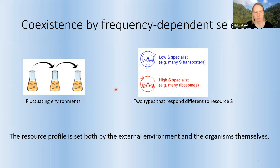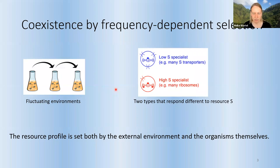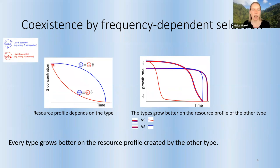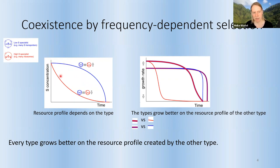Another interesting observation is that the resource profile is not only set by the external conditions, but also by the organisms themselves. Externally you decide how many nutrients you add after a transfer, but then the nutrient profile is also set by how fast the species eat these nutrients. Here's a cartoon showing over time: the blue one is the low resource specialist, and because it doesn't grow as fast on high resource concentrations, the nutrients are depleted much slower than when the high resource specialist — the red line — is there. The nutrients are depleted much faster.